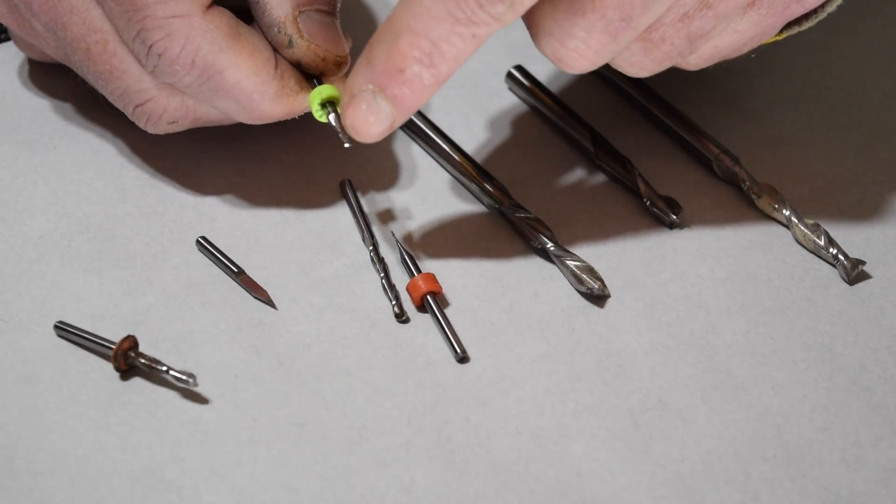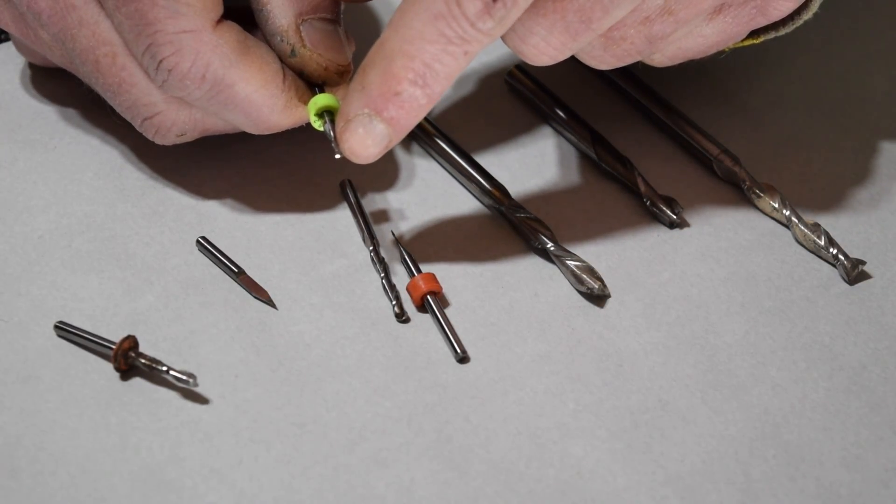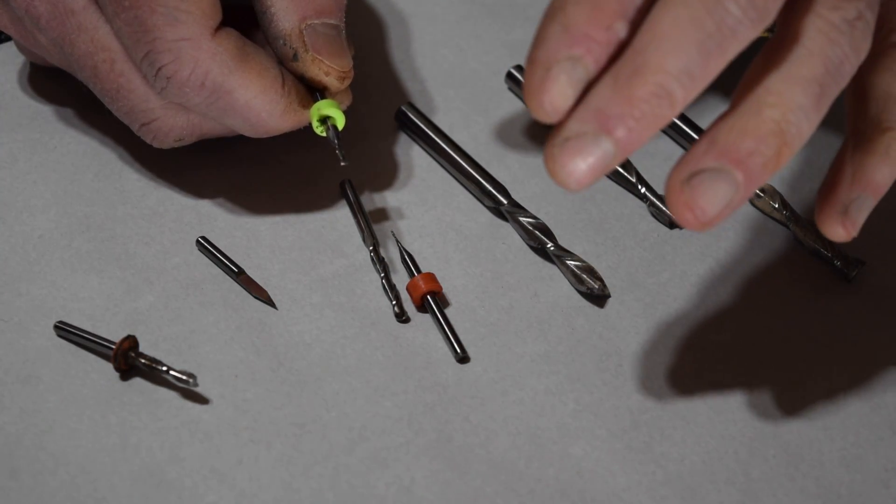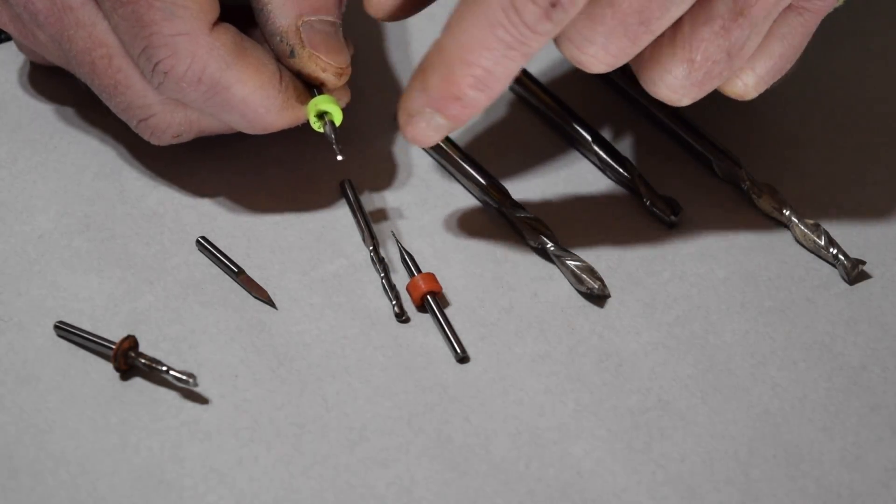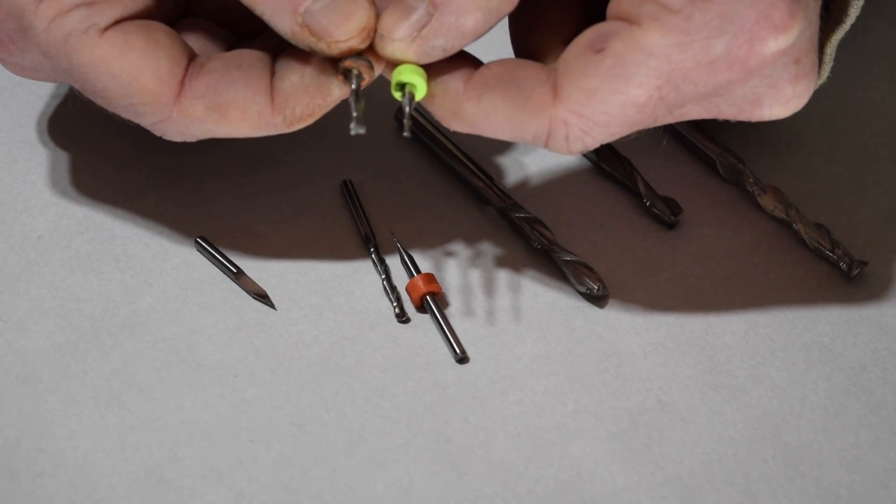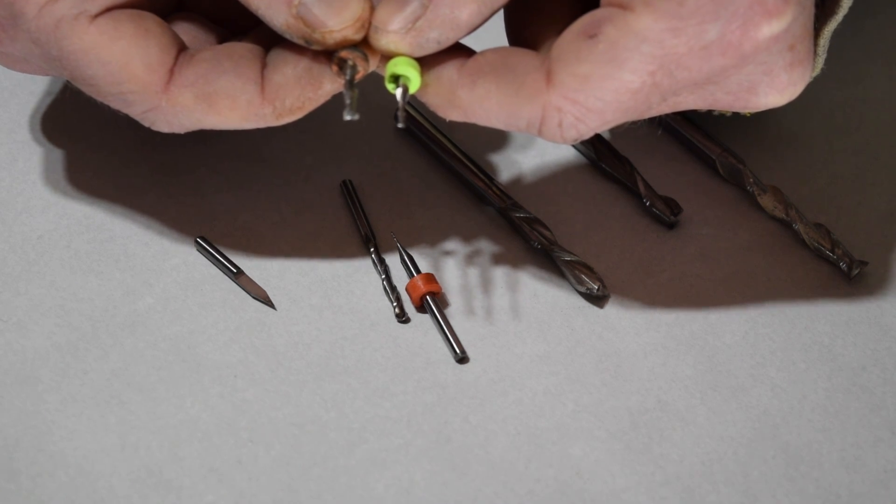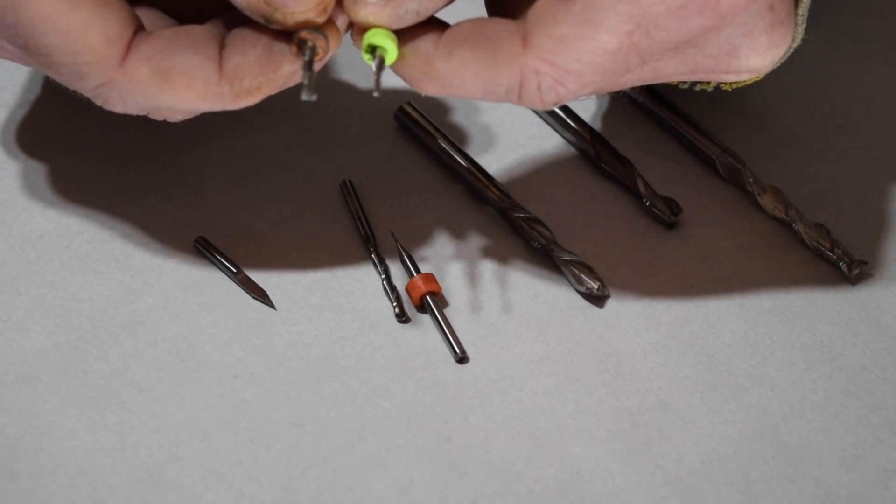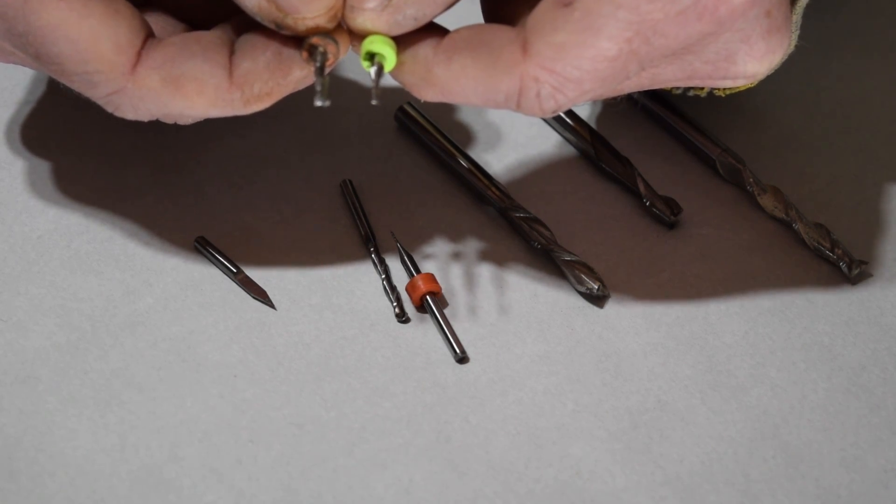And I also use this bit to hog out most of the wood on my inlays. And I'll either use the 16th or the eighth inch depending on the design. And what I try to do is carve out as much wood as I can using either one of these bits. Whichever one is going to do the work the fastest.